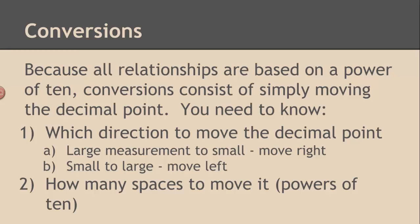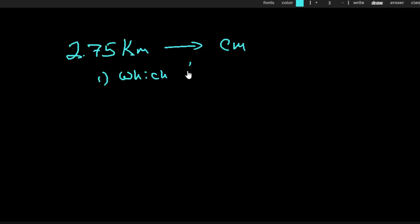So let's try a few examples. I'll do a couple and then I'll have you try a couple and see how you do. So let's take a look as an example. Let's convert 2.75 kilometers into centimeters. That's what we're going to do. 2.75 kilometers into centimeters. So we're going to ask ourselves the two questions. The first question is which direction do I need to move the decimal point? And the way we're going to answer that is we're going to determine am I going from a large to a small or small to large unit? I'm going from large. Kilometer is bigger than centimeter, so large to small.